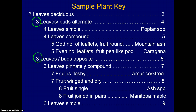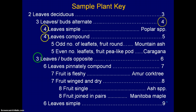If you select leaves/buds alternate and follow the key along to the other side, you'll see it goes to a number 4, which is also a unique number on the right-hand side. Only one can occur on this side. This tells you that you have not yet identified the plant and there are still more choices to make. In this case, you have two possible number 4s on the left-hand side because it's dichotomous.